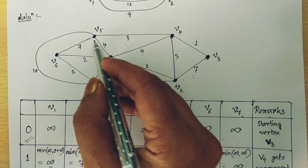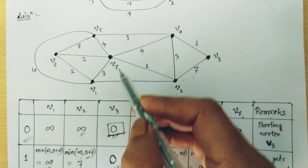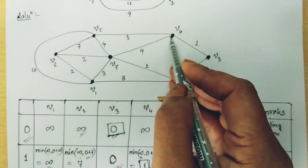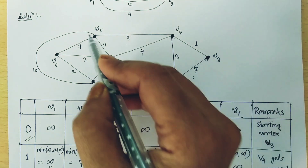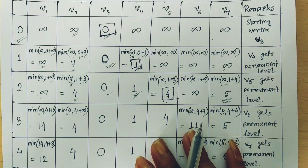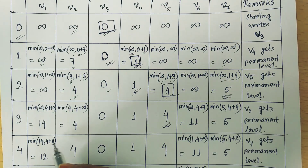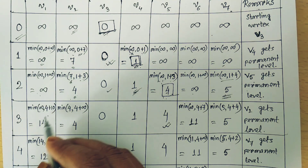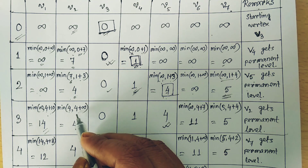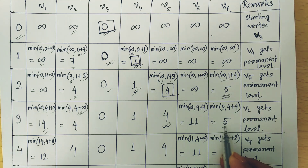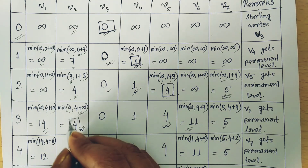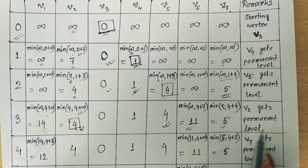We move to V5. V5 is connected with V1, V6, and V7. V4 already has its permanent label so we skip it. V5 has labeling value 4. For V1: previous is infinity, new is 4 plus 10 equals 14. For V2: no connectivity from V5, so it remains 4. For V6: new value is 4 plus 7 equals 11. For V7: new value is 5. The minimum remaining value is 4, corresponding to V2. V2 gets its permanent label.